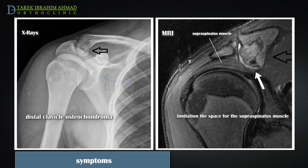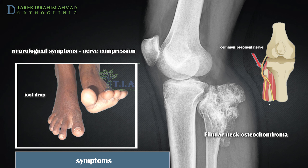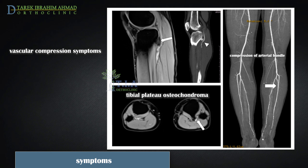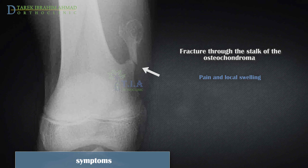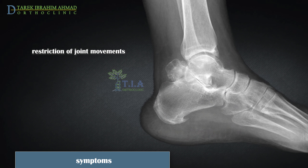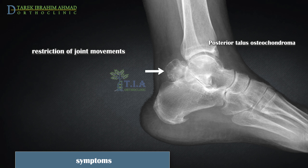Pain with a particular movement may occur if the tumor is rubbing against a tendon. If the tumor puts pressure on a nerve, there may be numbness and tingling in the associated limb. Circulation problems in a limb may occur if the tumor is inhibiting a blood vessel. In some cases, an injury can cause the stalk of a pedunculated osteochondroma to break, causing immediate pain and swelling in the area of the tumor.